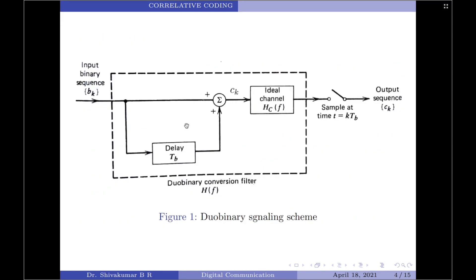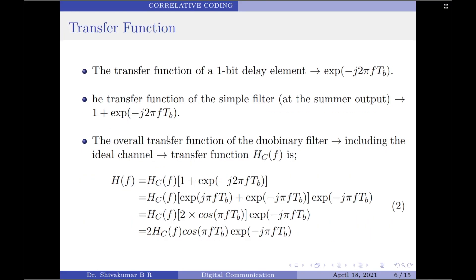The transfer function of the no-delay element, which is the straight line, is 1. Therefore, the transfer function of the simple filter — consisting of the no-delay line and the 1-bit delay line — is equal to 1 plus the transfer function of the delay element, written as 1 + e^(−j2πf·Tb). Therefore, the overall transfer function of the duobinary filter including the ideal channel Hc(f) is: H(f) = Hc(f) · [1 + e^(−j2πf·Tb)].